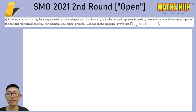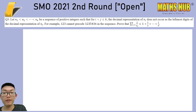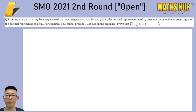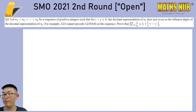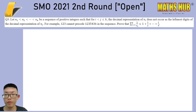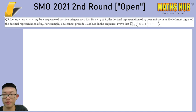Let's try to digest that first using the example, which says 1, 2, 3 cannot precede 1, 2, 3, 5, 4, 3, 6 in the sequence. Decimal representation just means base 10, which is our usual numbers. So nothing to worry about there — it doesn't really mean decimal places.